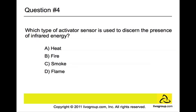Number four: Which type of activator sensor is used to discern the presence of infrared energy? The answer is D — flame. This type of sensor functions by energy associated with the flame or the pulsation of the flame. A flame activated sensor is the most expensive of the three types. For CISSP candidates, please remember the three types of fire detectors are heat, smoke, and flame.